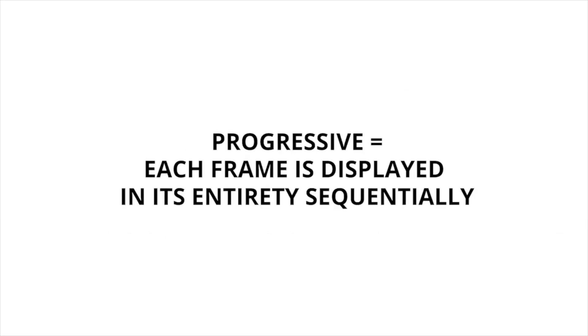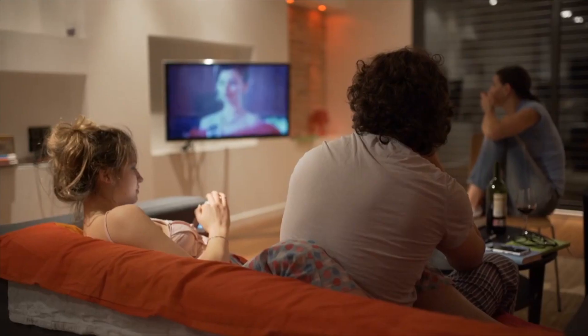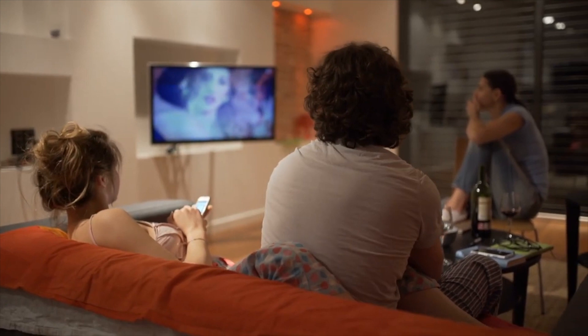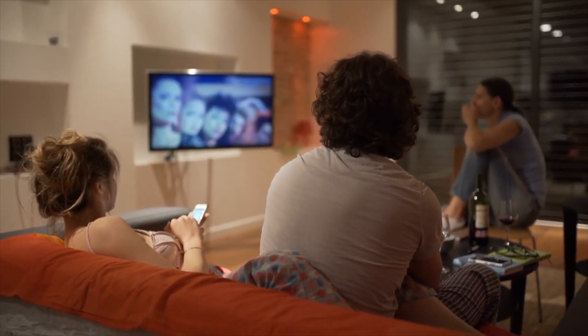With interlaced video, odd and even fields flash one after the other. With video filmed at 60i, you're watching a half frame every 1/60th of a second and a full frame every 1/30th of a second. Progressive scan, on the other hand, means each frame is displayed in its entirety sequentially, consuming double the bandwidth but providing a much cleaner image, generally at 30 or 60 frames per second. While interlacing was standard practice up to the mid-2000s, progressive scan has quickly become more popular as LCD and OLED displays have replaced CRTs.